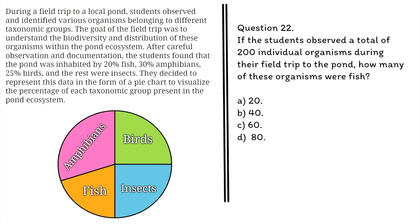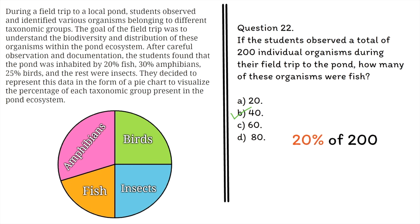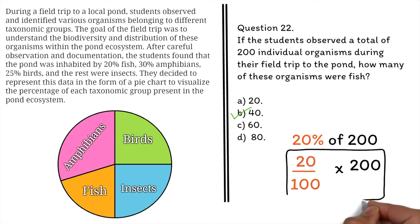Question 22: If the students observed a total of 200 individual organisms during their field trip to the pond, how many of these organisms were fish? A. 20, B. 40, C. 60, D. 80. The correct answer is B, 40. On a pie chart, you can be given percentages or actual values — you should know how to convert between the two. To find the actual value of the fish, we find 20% of 200: 20/100 × 200 = 40.